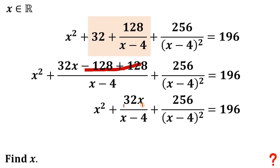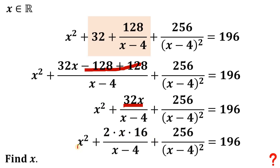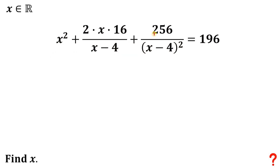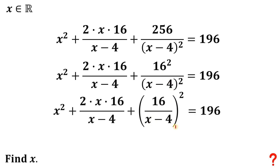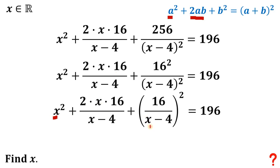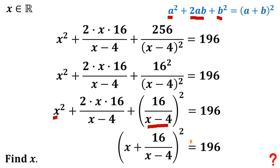Now, why is this important? Because 32 is just 2 times x times 16. We have x squared, and 256 is just 16 squared. So we can combine the last term as 16 over (x minus 4). This follows a perfect square trinomial pattern: the square of the first term x squared, plus 2 times the first term and the last term (x and 16 over (x minus 4)), plus the square of the last term. So the left-hand side rewrites as (x + 16/(x-4)) raised to the power of 2.